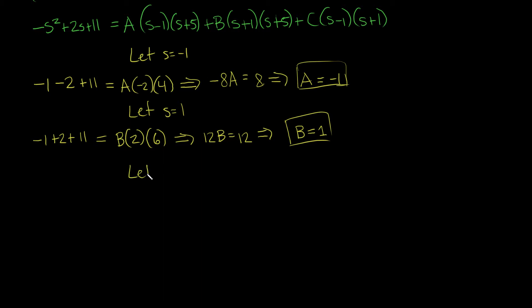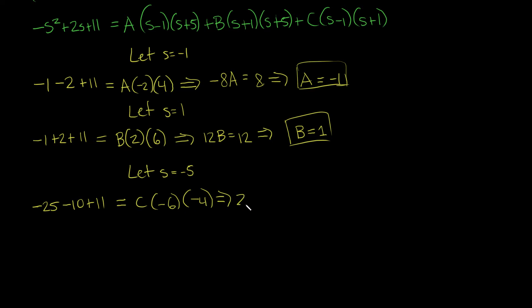Let s equal negative 5. We get negative 25 plus 2 times negative 5 plus 11: that's negative 25 minus 10 plus 11, which equals negative 24. The a and b terms go away — negative 5 plus 5 cancels both — and we're left with c times (negative 5 minus 1)(negative 5 plus 1), which is negative 6 times negative 4, giving 24c equals negative 24. So c equals negative 1.